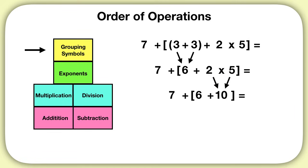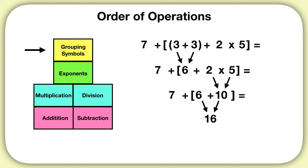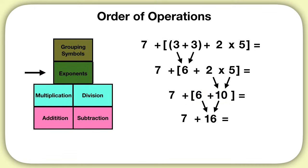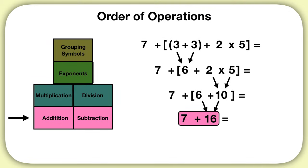What is the solution to this equation? Now we can solve our brackets. 6 plus 10 is 16. There are no more grouping symbols, no more exponents, no multiplication or division. So now we add. 7 plus 16 gives us a final answer of 23.